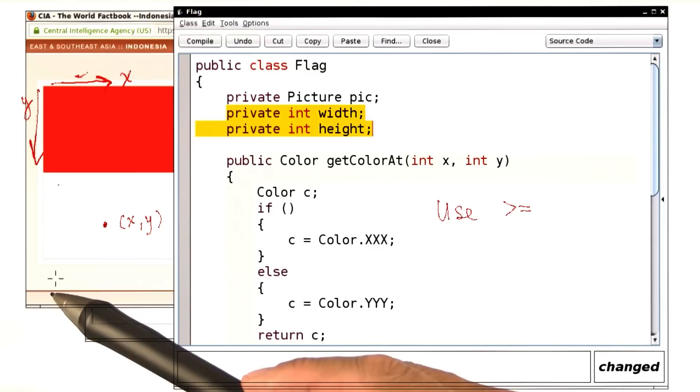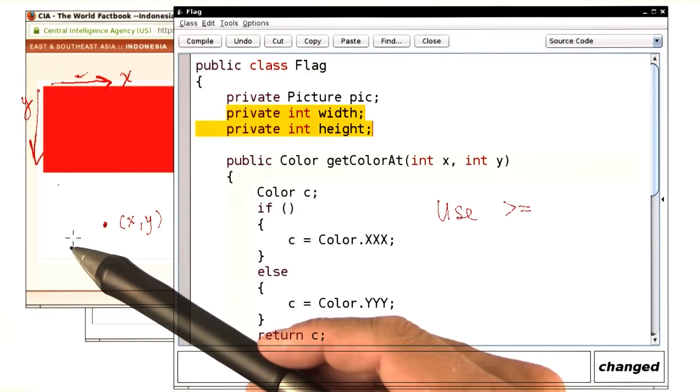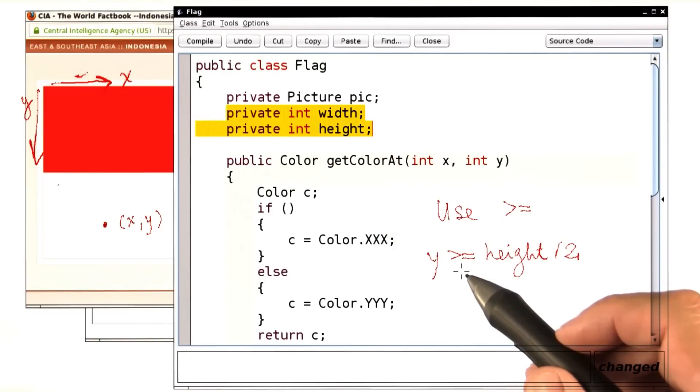So I have to worry about the y value being greater than, or maybe greater or equal, we'll come back to that in a minute, than half the height. Now is it greater than or greater than equal, or less than or less than equal. It's easier to make these things wrong. So let's look at the actual numbers.